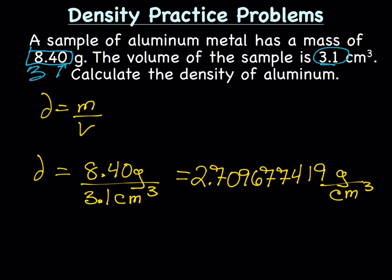Our volume has 2 sig figs, which means our answer needs to have 2 sig figs. We'll keep the 2 and the 7. Because the zero is smaller than 5, we're just going to drop the rest.